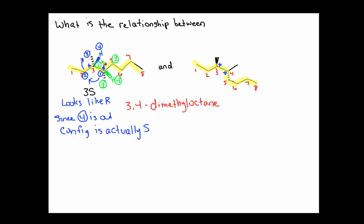We'll draw an arrow from 1 to 2, 2 to 3. So we're going around and it looks like R, but since H is pointing out, it's actually S. So at carbon 4, we have S-configuration.